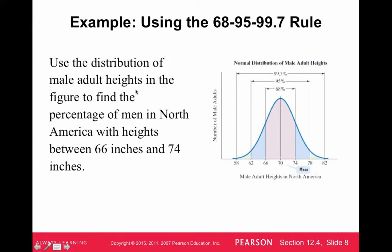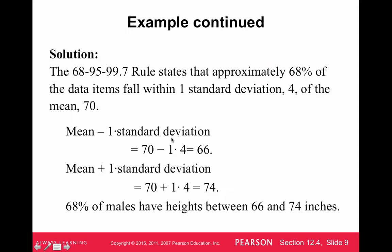Using the distribution of male adult heights, find the percentage of men in North America with heights between 66 inches and 74 inches. Both 66 inches and 74 inches are one standard deviation below and one standard deviation above the mean, respectively. When we talk about one below to one above, from the 68-95-99.7 rule, we know that 68% of all the heights are within one standard deviation of the mean. So the answer is 68%. You can either draw the picture, which is much easier, or show the work.